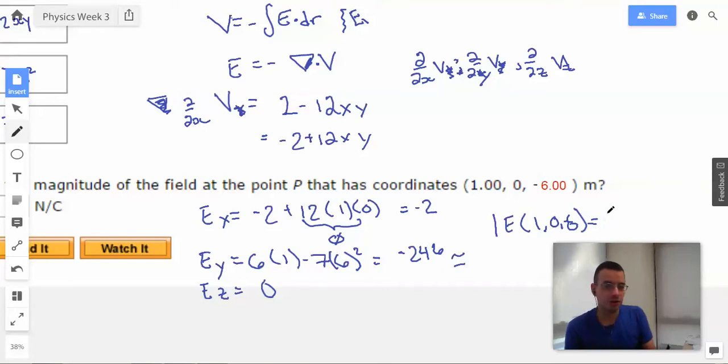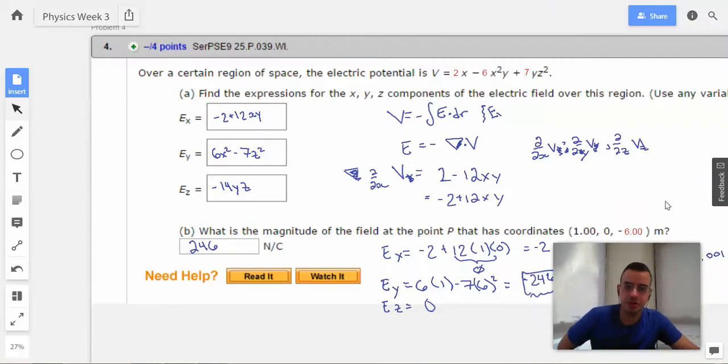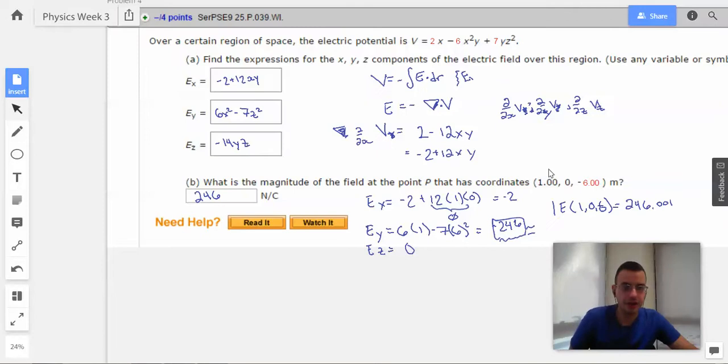So the magnitude of E at 1, 0, negative 6 will equal 246 plus about 0.001. Because the hypotenuse is going to be really close to the biggest number in this case, since it is so much bigger. So I'm just going to say the magnitude at this point is going to be 246. And magnitude is going to be positive since magnitudes are always positive.